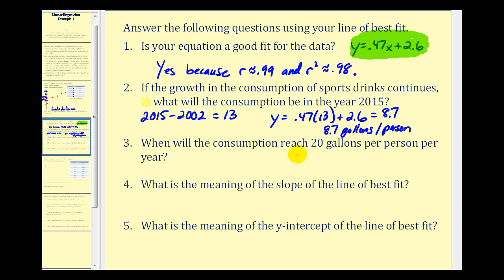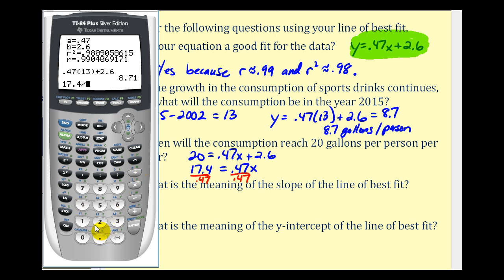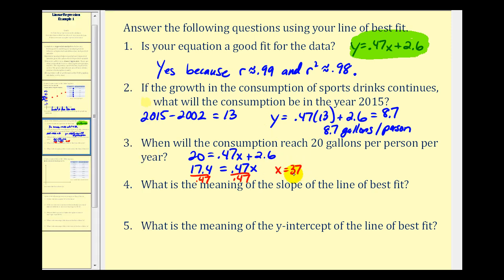Number three, when will the consumption reach 20 gallons per person per year? Let's go back to the calculator. So now we want to know what year it would be when y is equal to 20. So we could solve this algebraically. We would subtract 2.6 on both sides. That would give us 17.4 equals point four seven x. And we divide both sides by point four seven. So x is approximately 37. That's the number of years past 2002. So the actual year would be 2002 plus 37 or the year 2039.